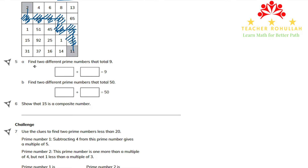In question 5, part A asks for two different prime numbers that total 9. The answer is 7 and 2. Part B asks for two different prime numbers that total 50. The answer is 43 and 7, since 43 plus 7 equals 50.